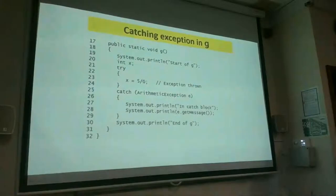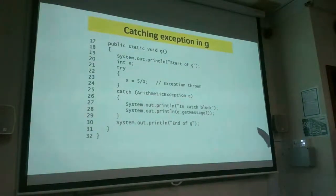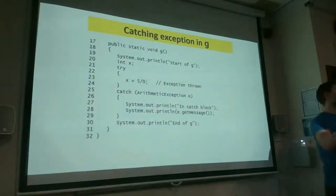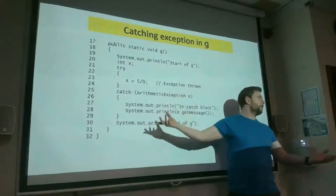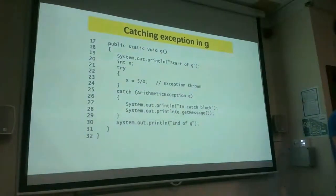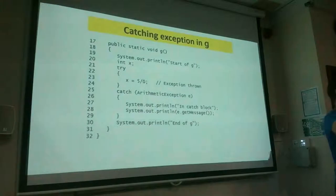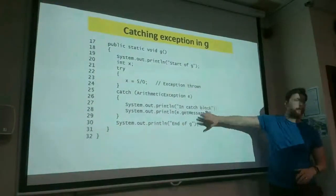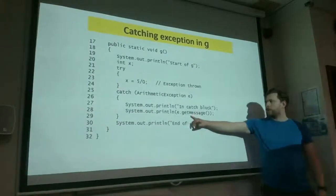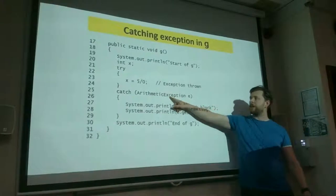The catch block allows you as the programmer to handle the error however you see fit. In first year we're doing the bare minimum — just printing the message and ending. But inside a catch block you could set a default value if division by zero occurred, or for an input mismatch you could truncate a double to an integer. For first year, we'll use 'e.getMessage()' to get the error message.